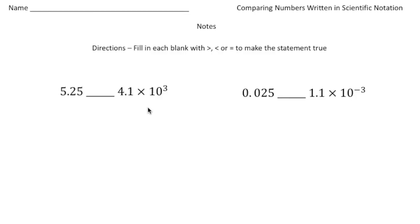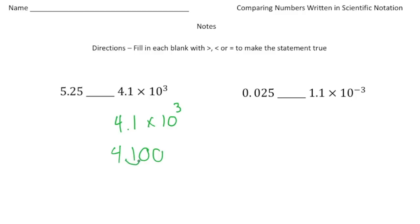The key to these problems is converting the numbers written in scientific notation into standard form. So I'm going to change 4.1 times 10 to the 3rd by multiplying it by 10 three times. Starting with 4.1: multiply by 10 gives 41, another 10 gives 410, and a final 10 gives 4,100. So the question is which number is larger — 5.25 or 4,100? Obviously 4,100 is larger, so the inequality sign will face this way.